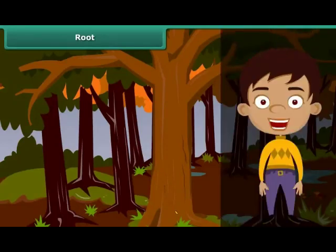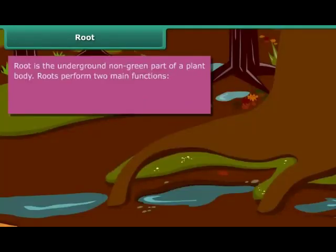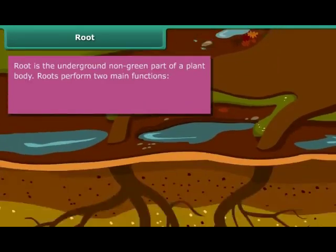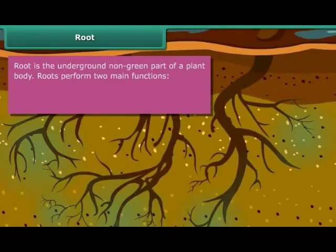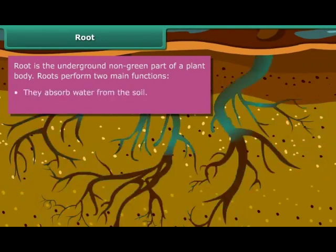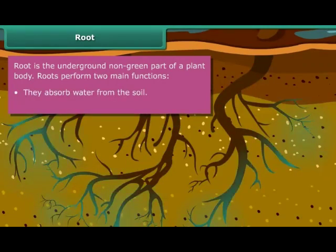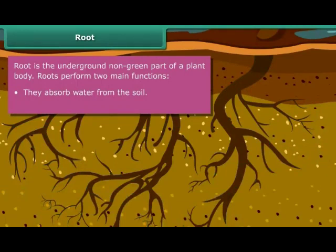Let us begin our discussion with plant roots. Root is the underground non-green part of a plant body. Roots absorb water and minerals from the soil, which are crucial for the survival of a plant. They also attach a plant to the soil for its entire life.